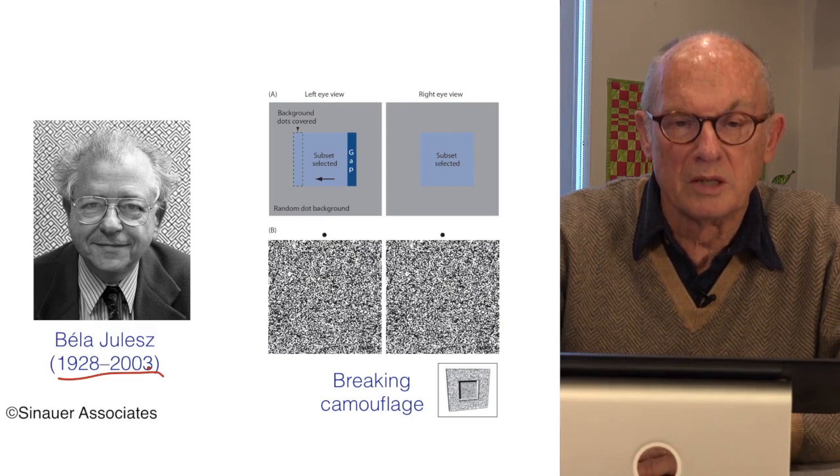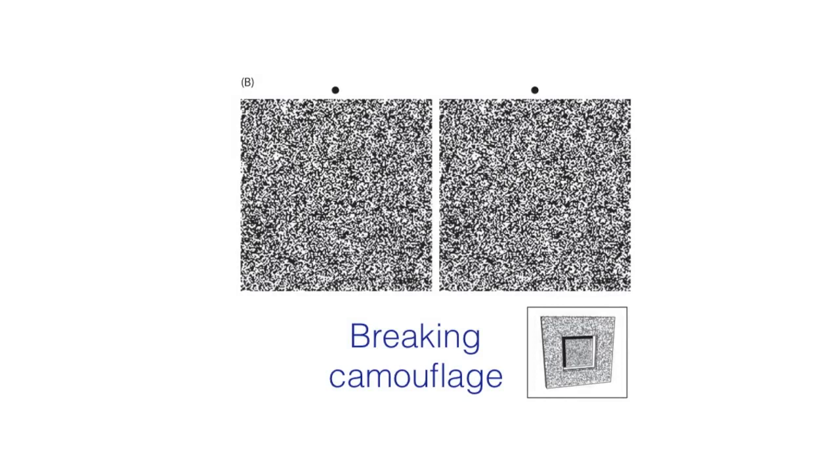What is a random dot stereogram and how does it pertain to the correspondence problem? First of all, let's describe the phenomenon itself. Those of you who can do what's called free fusion, who have the ability to look through the computer screen, you all can do this with practice. I didn't think I could do it until I got interested in this and practiced a little bit. If you fuse these two images in free fusion just by looking through the computer screen, you will see an object that pops out in three dimensions that looks like it is behind the surface that the rest of the dots comprise.